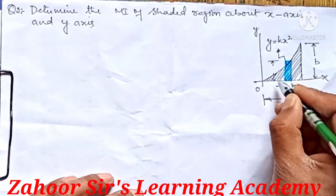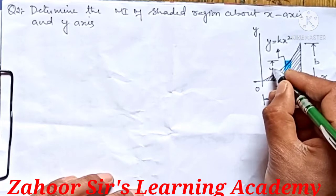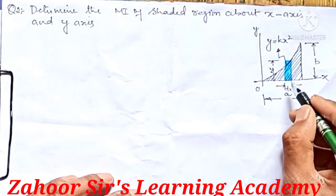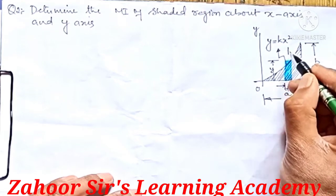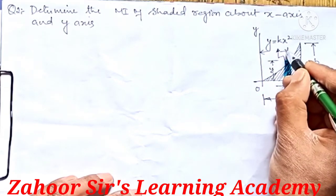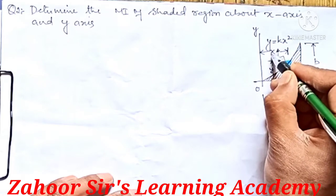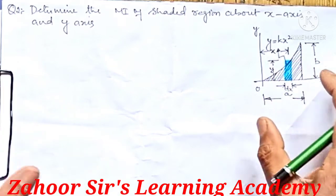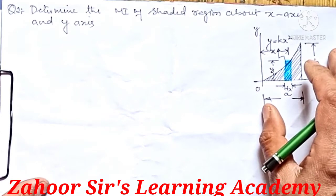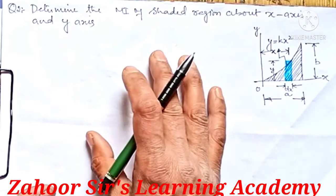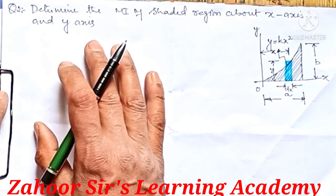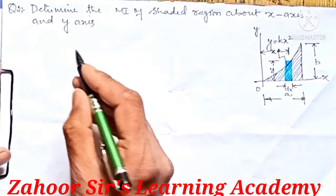We give the dimensions to this strip. The width of this strip is dx, and its height from this point to this point is y. The distance from this point to this point is x. We need to give different dimensions to this elementary strip before we can use the direct integration method.